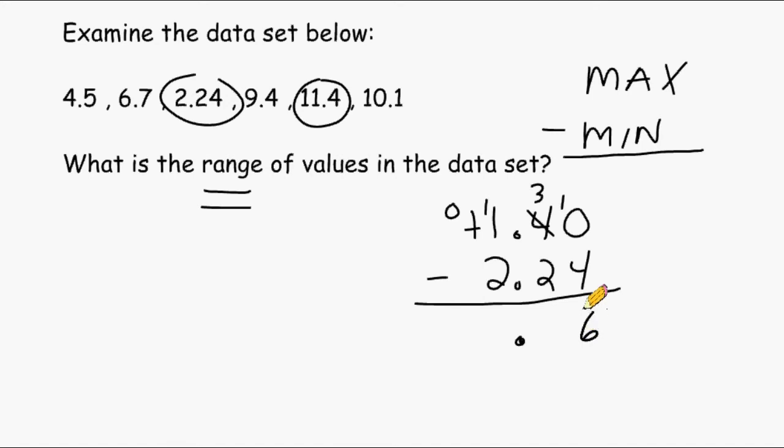Okay, now 10 take away 4 is 6, 3 take away 2 is 1, and 11 take away 2 is 9. So the range of this data set is 9.16.